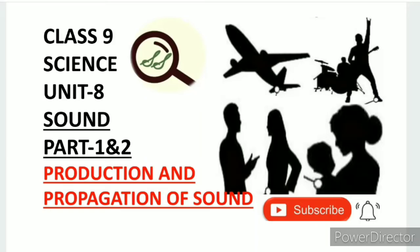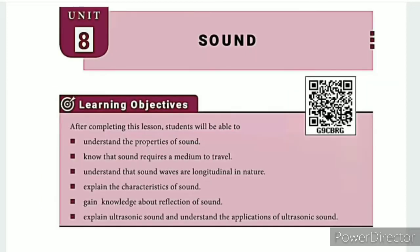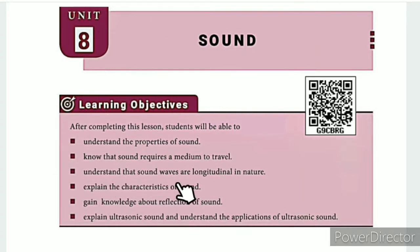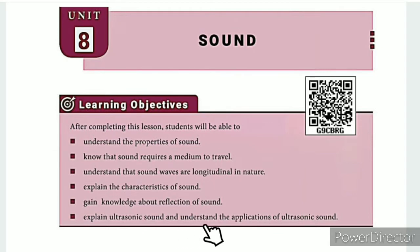Greetings from SS Class 9 Science Unit 8: Sound, Parts 1 and 2 — Production and Propagation of Sound. The lesson-level learning objectives are: understand the properties of sound, know that sound requires a medium to travel, understand that sound waves are longitudinal in nature, explain the characteristics of sound, gain knowledge about reflection of sound, and explain ultrasonic sound and its applications.